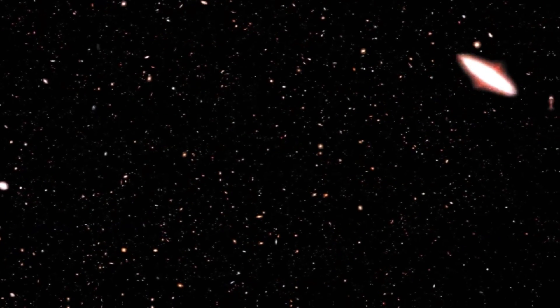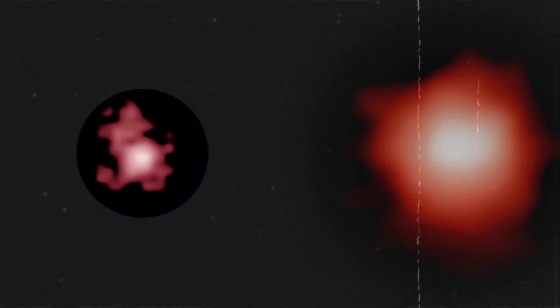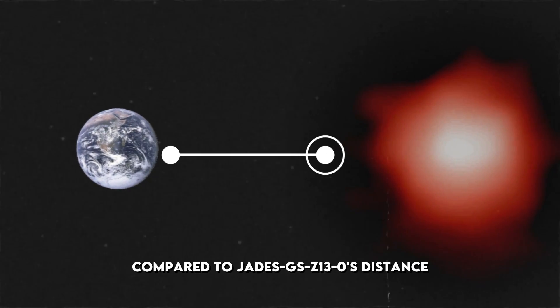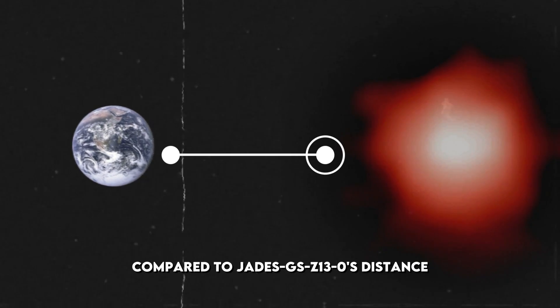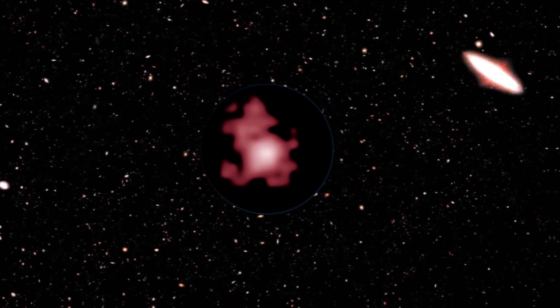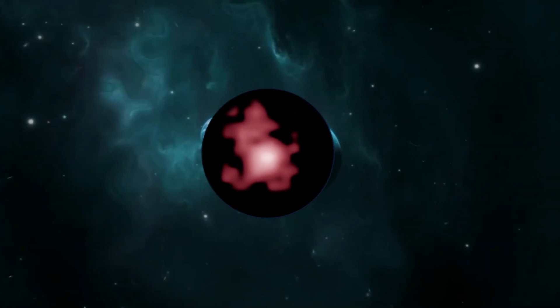However, there are also some differences between the two galaxies. For example, GN-Z11 is slightly more distant than JADES-GSZ-13-0, located about 13.4 billion years away from Earth, compared to JADES-GSZ-13-0's distance over 13 billion light years. This makes GN-Z11 the most distant galaxy ever observed at the time of its discovery, before being surpassed by JADES-GSZ-13-0.